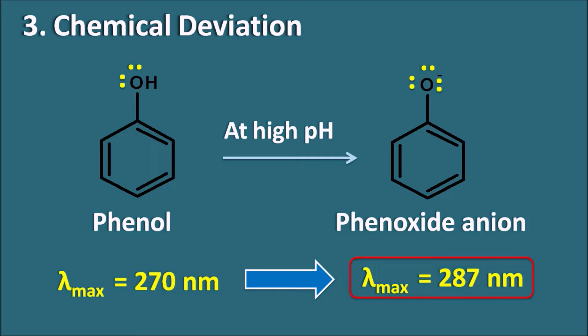Phenol shows one type of absorption and phenoxide anion shows another. Whenever the pH is not constant across all samples, we can observe a deviation from the Beer-Lambert law because phenol may be converted to phenoxide anion, increasing absorptivity. Similarly, when the concentration of the sample increases, molecules can associate to form dimers and polymers, which again have a different absorption. Either association, dissociation, or change in pH may result in deviation from the Beer-Lambert law — hence this is called chemical deviation. To prevent it, we must check whether the sample undergoes association or dissociation, and fix the pH using a suitable buffer system.